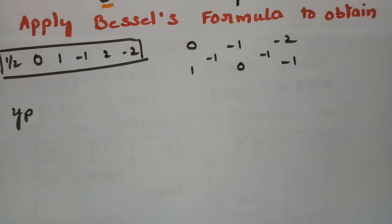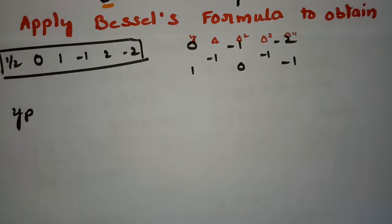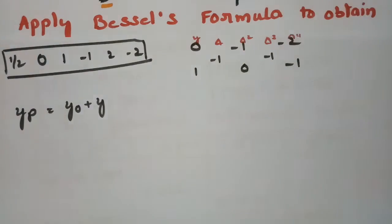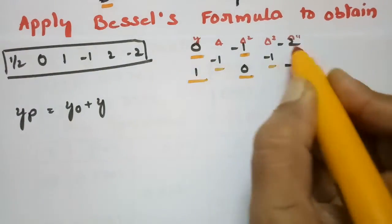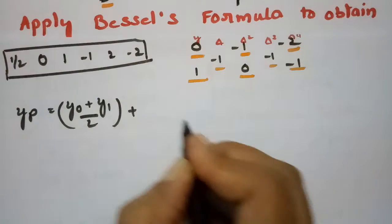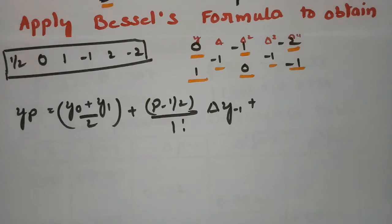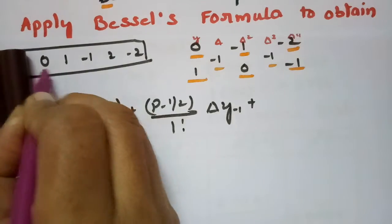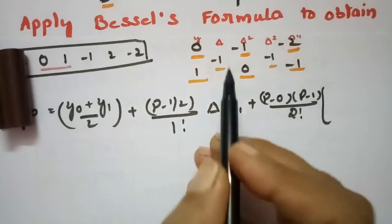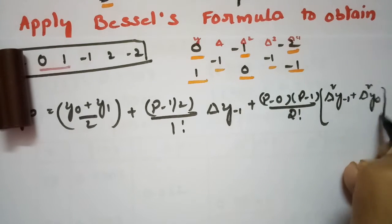YP equals Y₀ plus Y₁ divided by 2 — that is the double values first. Then plus (P − 1/2) divided by 1 factorial times the first difference ΔY₋₁. Next, taking the two values 0 and 1, we write P(P−1) divided by 2 factorial times (Δ²Y₋₁ + Δ²Y₀) divided by 2.